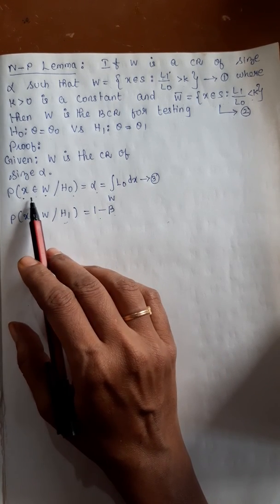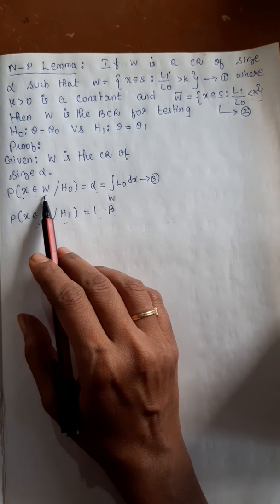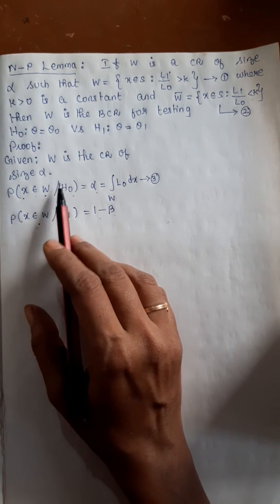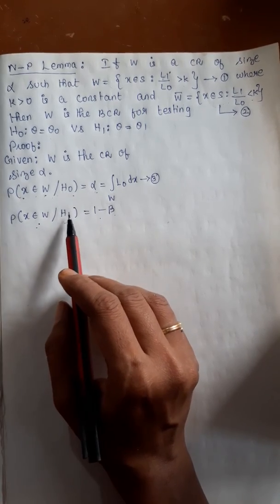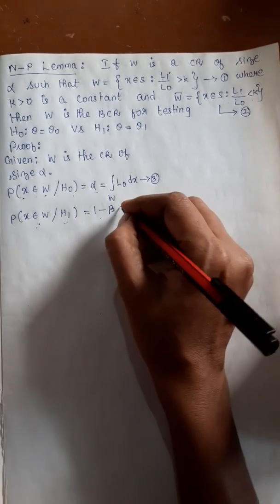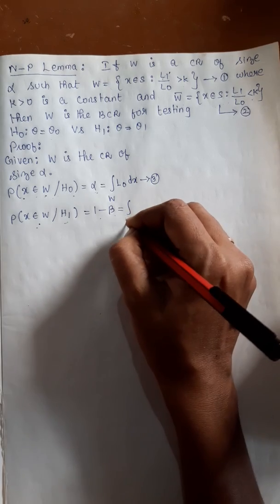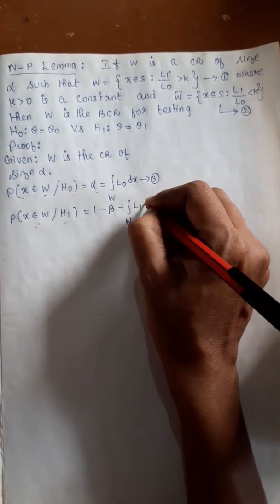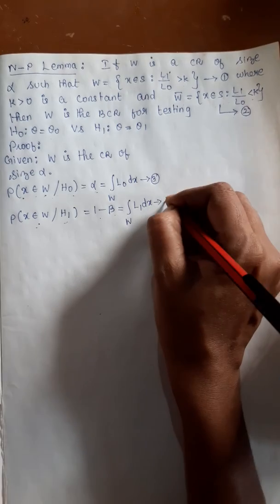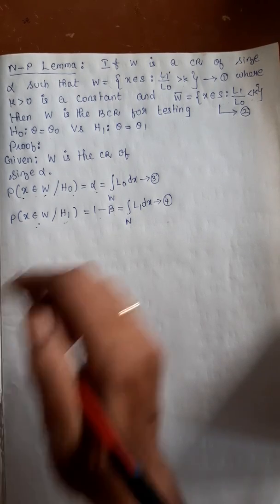So: probability of x belonging to w when H0 is true is alpha; probability of x belonging to w when H1 is true is 1 minus beta. Written in integral form: integral over w of l0 dx equals alpha — call this equation 3 — and integral over w of l1 dx equals 1 minus beta — call this equation 4.